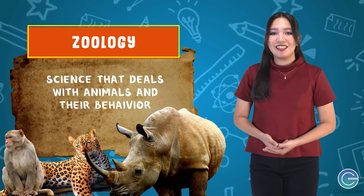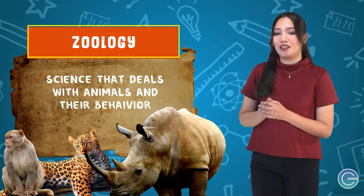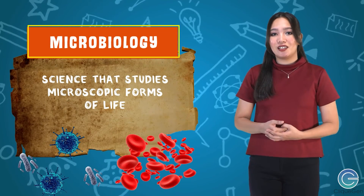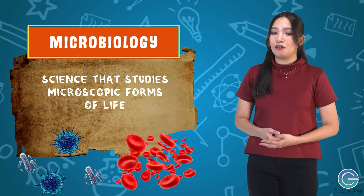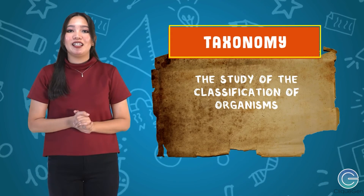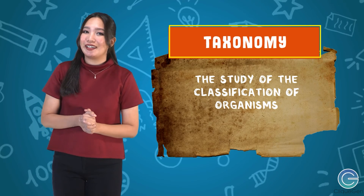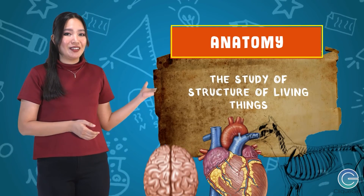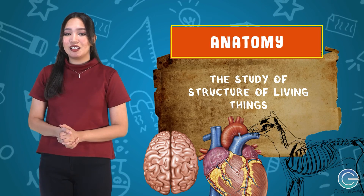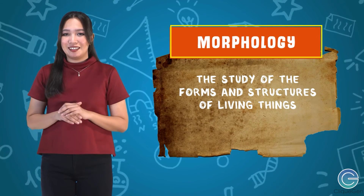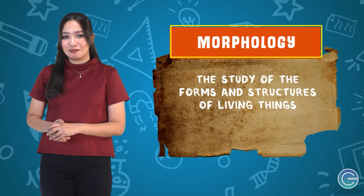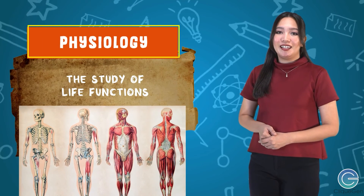Zoology is the science that deals with animals and their behavior. Microbiology is the science that studies microscopic forms of life. Next is taxonomy, the study of the classification of organisms. Anatomy is the study of the structure of living things. Morphology is the study of the forms and structures of living things.